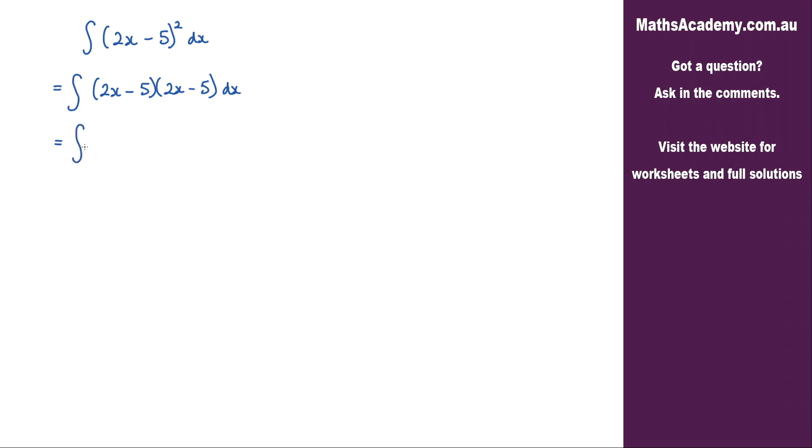So we get the integral of the following. Let's expand these brackets. We're going to have the 2x multiplied by the 2x which is 4x squared.